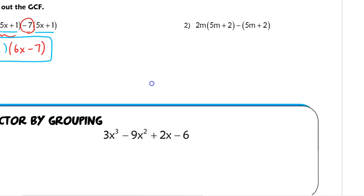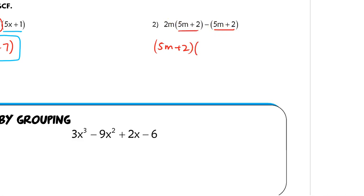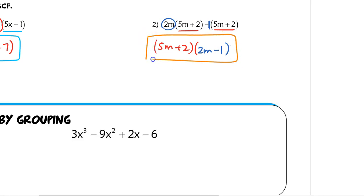The same thing goes for number 2, except it's a little different after we take out the GCF of 5m plus 2 — that's what both terms have in common. When I rewrite what's left over from the first term, I'm left with 2m. In the second term, remember there's an invisible 1 in front of that set of parentheses, so we have negative 1 left over. So 2m minus 1 goes inside the other parentheses — there's my answer.